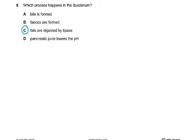Question 8: Which process happens in the duodenum? Bile is formed in the liver, so this was wrong. Feces are formed in the large intestine, they're stored in the rectum. Pancreatic juice lowers the pH? No, it increases the pH because it's got an alkali in it. And fats are digested by lipase. In the duodenum, we have the three enzymes: pancreatic amylase, lipase, and pancreatic protease which is trypsin, which digests carbohydrates, fats, and proteins, and bile as bile salts which emulsify fats.